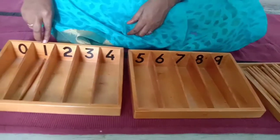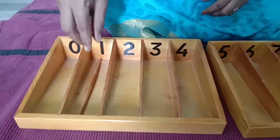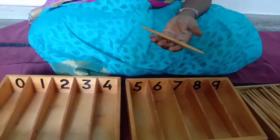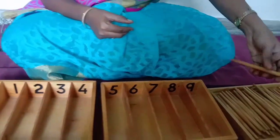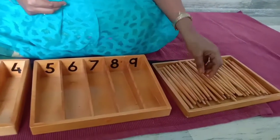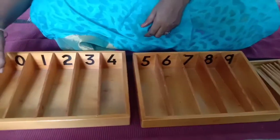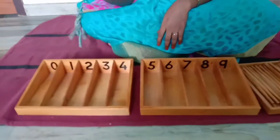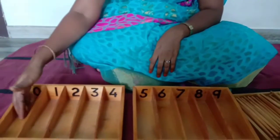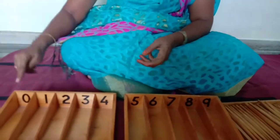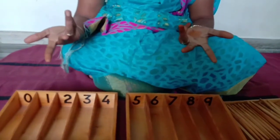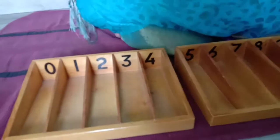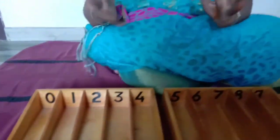And then what is the number? One. One. So one. Replace it. And then next one is, there is no spindles. There is no spindles. Zero is nothing. Zero means nothing. So zero has no value.